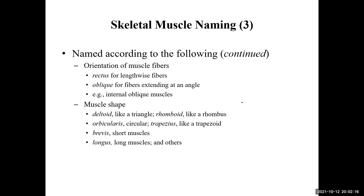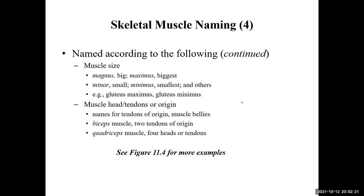Another way we name muscles is by how big or small they are. Gluteus maximus is the muscle in your gluteal region you're sitting on right now — that's the big muscle. Magnus is another big one. Anything named minor, like rhomboid minor or gluteus minimus — minimus is the smallest. We'll see how these terms describe the size of the muscle.